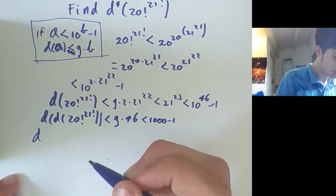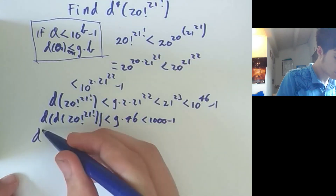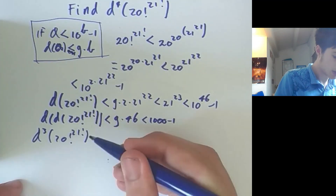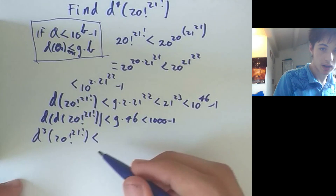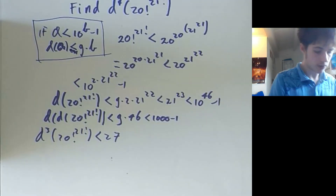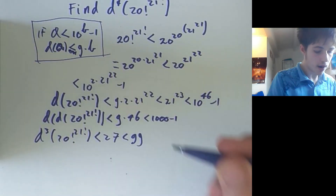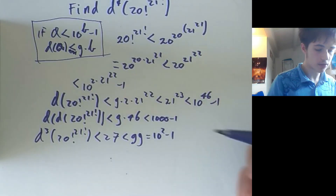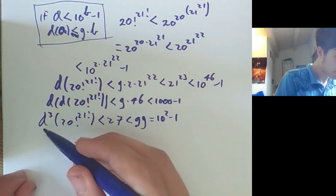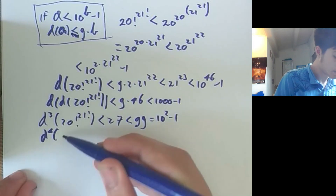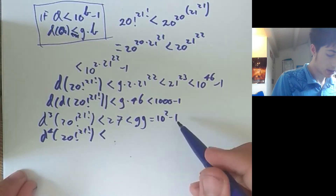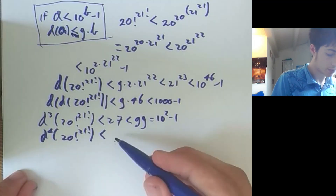So we can apply the same trick once more. The third digit sum of 20 factorial to the power of 21 factorial is less than 9 times 3, which is 27. And 27 is most definitely less than 99, which is 10 squared minus 1. Applying the trick one final time, the fourth digit sum of 20 factorial to the power of 21 factorial is less than 9 times 2, which is 18.